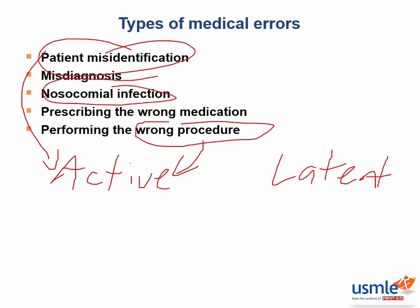How could a nosocomial infection be considered a latent error? Well, for instance, the physician may always wash his hands and put on a new gown prior to going into a patient's room, but the patient might still get an infection — maybe staph or something like that — from a contaminated bedsheet or equipment that wasn't properly sterilized.